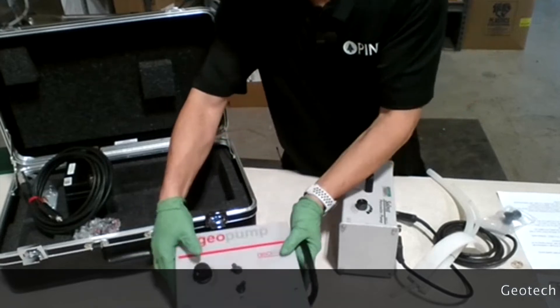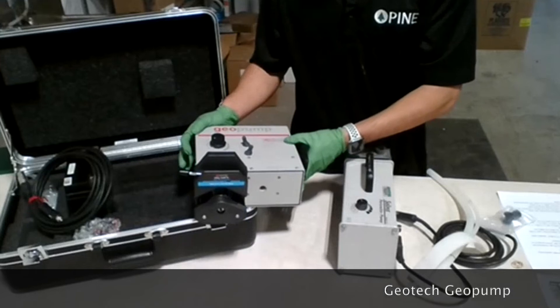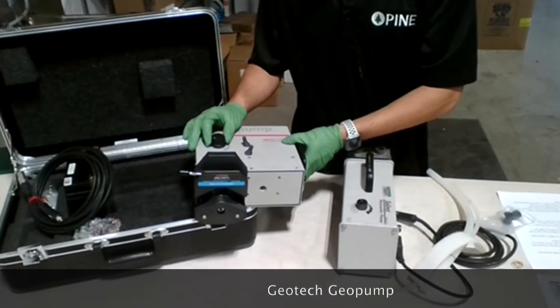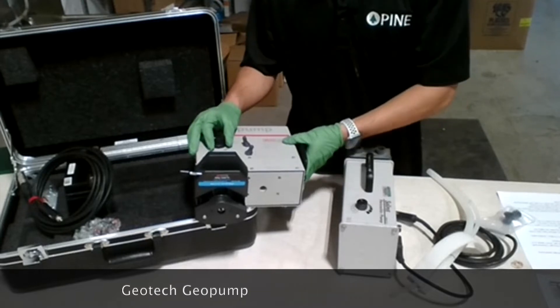The Geotech Geopump - for those who don't know, the peristaltic pump is a variable speed pump that's primarily used for low flow sampling.